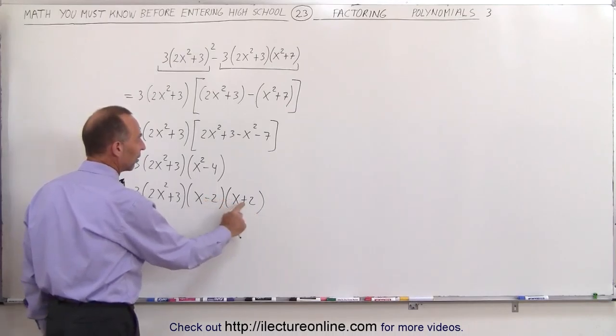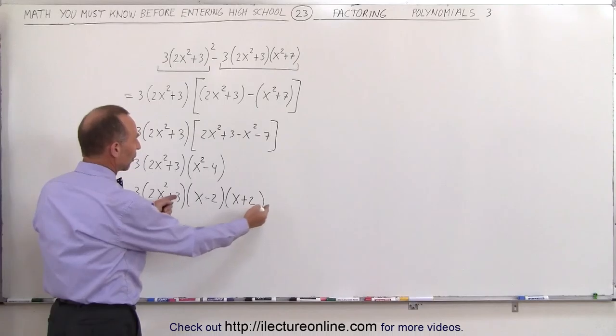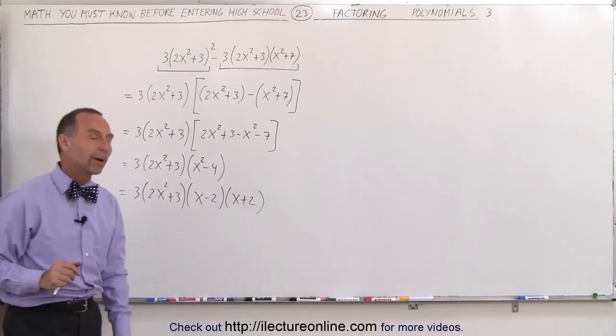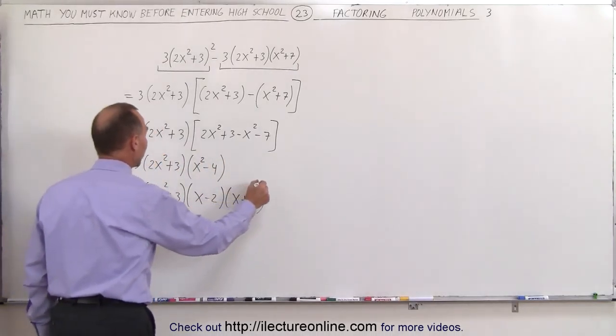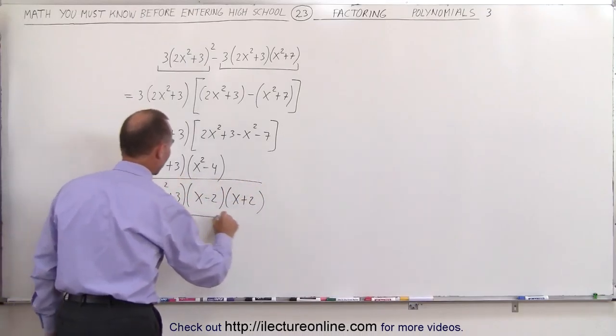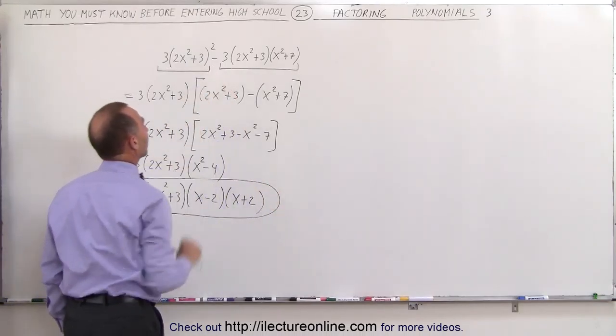One of them will be minus, the other one will be plus. Notice when you multiply this together, you end up, again, with x squared minus 4, which means that this is the final factored form of the expression that we started with.